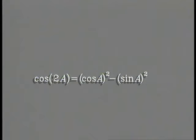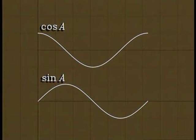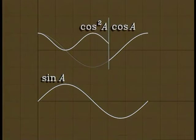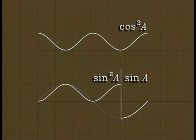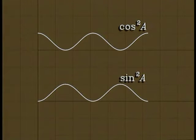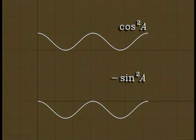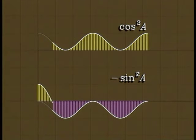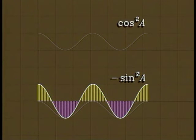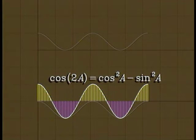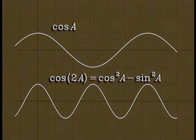The right-hand side is usually written as cosine squared a minus sine squared a. This is cosine squared, and this is sine squared. When you subtract cosine squared minus sine squared, the result is a cosine curve of the same amplitude but twice the frequency. With the help of periodicity, we can extend these formulas to all values of a.